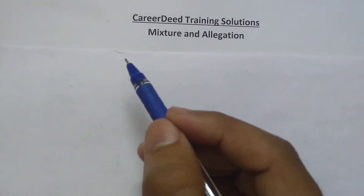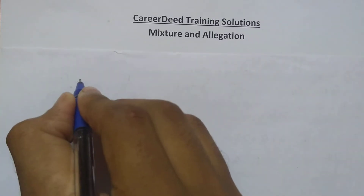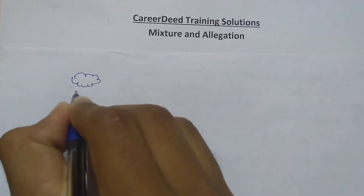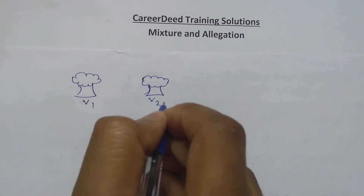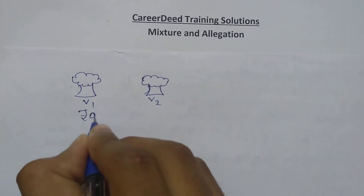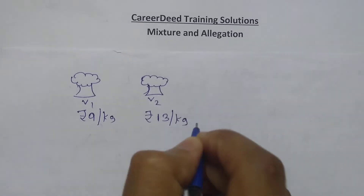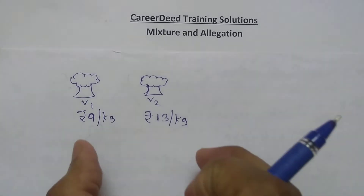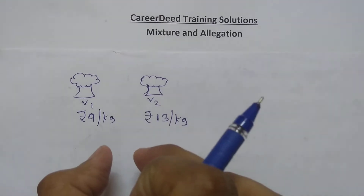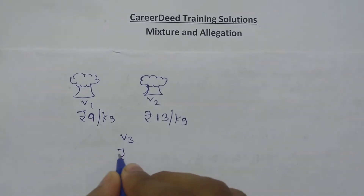Before entering into the problems, let me explain what is the main role of allegation in solving the weighted average problems. Now let us assume you have two varieties of rice — variety 1 of some kilogram and variety 2 of a different kilogram. You don't know how many kilograms of each variety is available, but you know the cost price of the first variety is rupees 9 per kg and the cost price of the second variety is rupees 13 per kg. So first variety costs rupees 9 per kg and the second variety costs rupees 13 per kg. Your plan is to mix both the varieties and obtain another variety — let it be variety 3 — of cost price rupees 10 per kg.